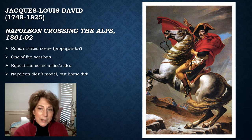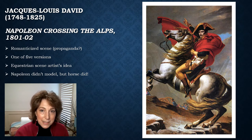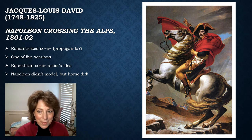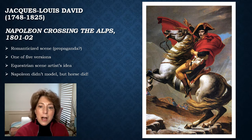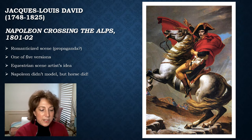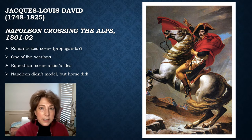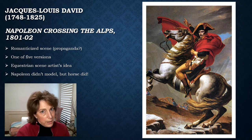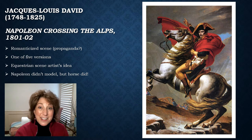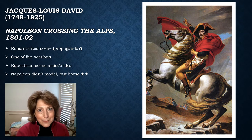Napoleon refused to sit for this picture, so the artist used his son as a model, sitting him on top of a ladder to get the proper proportions. The horse, however, was allowed to pose. This is a very large picture — about 126 by 104 inches, roughly 10 by 12 feet. It now hangs in Versailles; it originally hung in the Louvre but was removed and put in storage around 1815 when Napoleon fell out of favor.